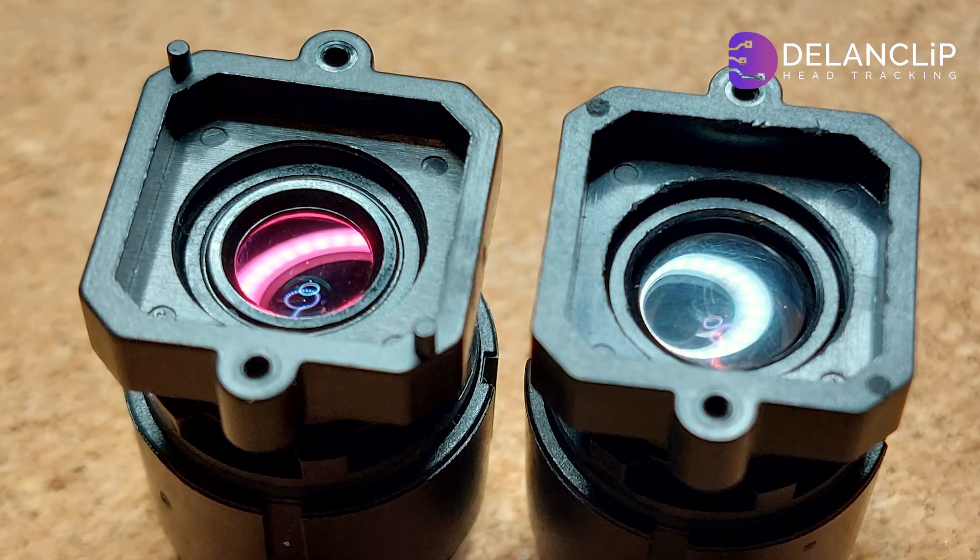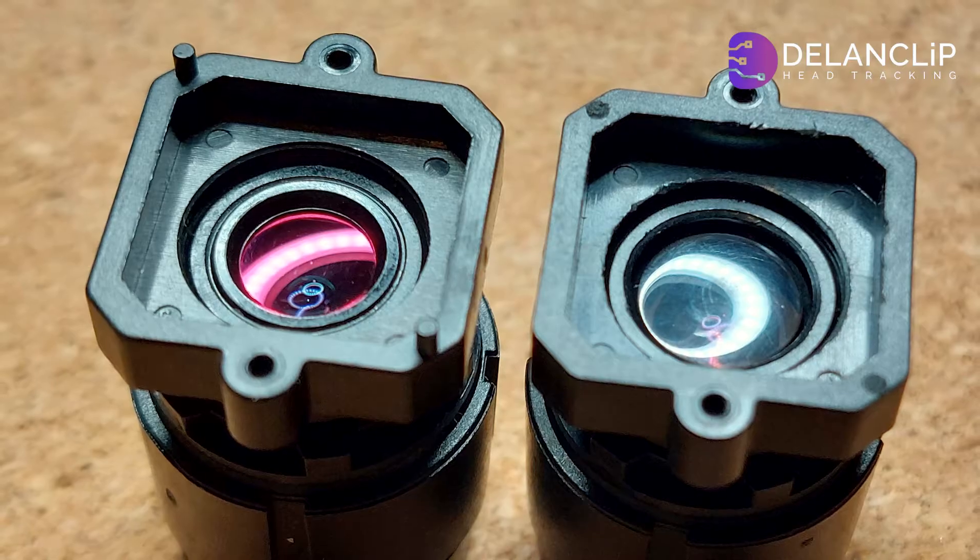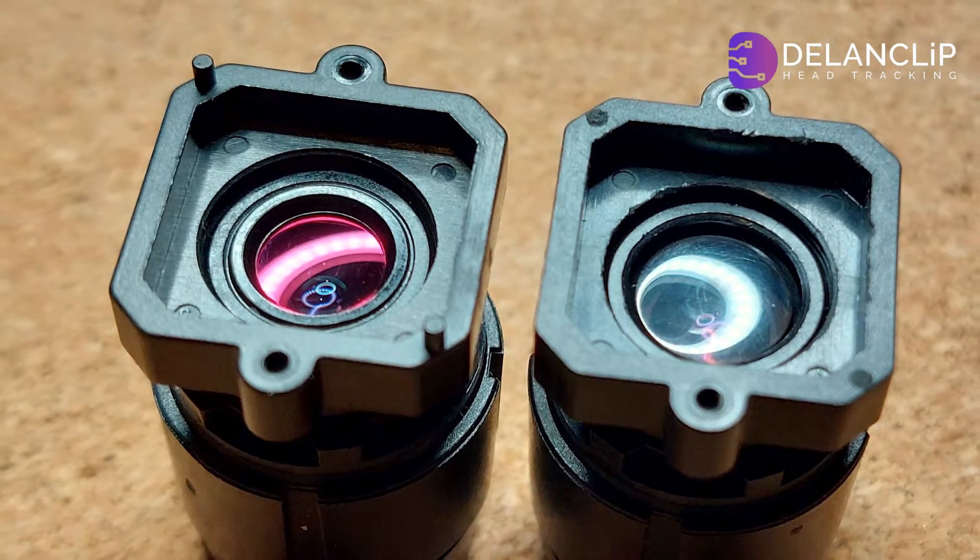You can see here, the unmodified lens on the left has a purple tint, while the modified one on the right is clear.